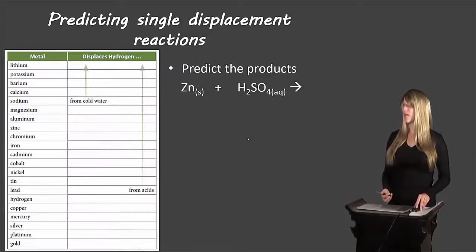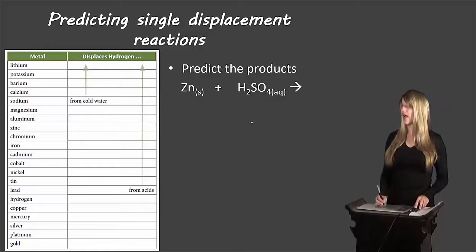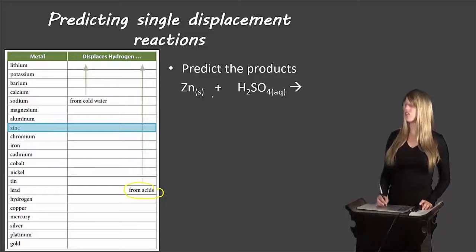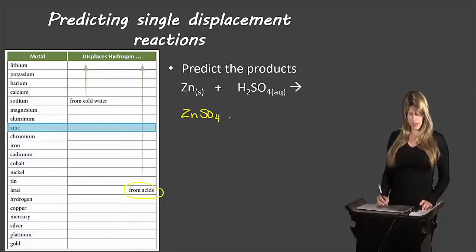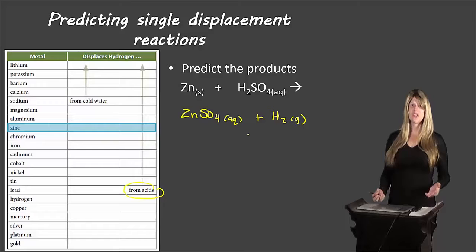Here we're looking at the displacement of hydrogen in an acid. We have zinc looking to displace hydrogen in sulfuric acid. Zinc crosses the arrow labeled 'from acids' on the activity series, which means zinc can displace hydrogen from acids. That will form zinc sulfate, which is aqueous, and hydrogen gas. This equation is already balanced.